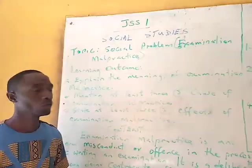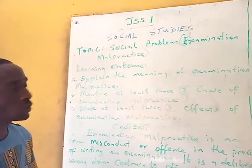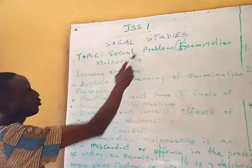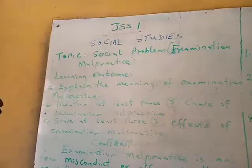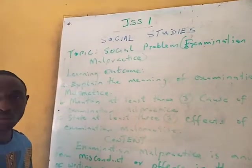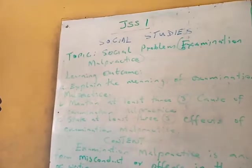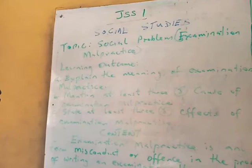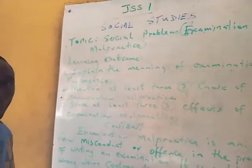Welcome to social studies class for GSS 1. The topic we are looking at today is social problems, and we are focusing on examination malpractice. Social problems include armed robbery, corruption, and the like, just as we discussed last term. This term we are focusing on examination malpractice. It is also a social issue.